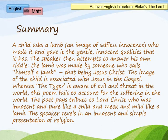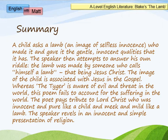In this poem, a child asks a lamb — and the lamb is an image of selfless innocence — who made it and who gave it its gentle, innocent qualities. This is often seen as the opposite poem to The Tiger, where you have a fearsome, more sinister, malevolent beast. The speaker then attempts to answer his own riddle: the lamb was made by someone who calls himself a lamb, that being Jesus Christ. The image of a child is also associated with Jesus in the gospel. This poem fails to take into account any suffering in the world, which firmly places it within innocence — there's no suffering at all in this poem.